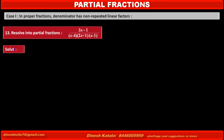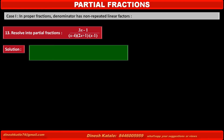Solution. The denominator of the given fraction has three factors. Therefore, by taking A, B and C as numerators of these three factors, we can write: Let the given fraction (3x minus 1) upon (x minus 4)(2x plus 1)(x minus 1) be equal to A upon (x minus 4) plus B upon (2x plus 1) plus C upon (x minus 1).